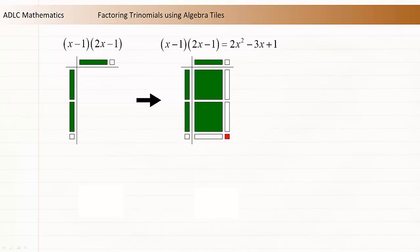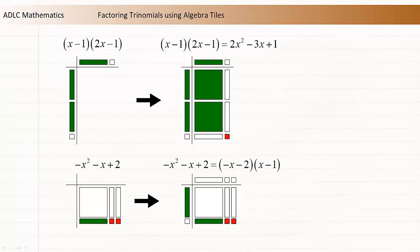This suggests that you can use algebra tiles to reverse the process and factor trinomials. If you can represent a trinomial as a rectangle, its length and width will represent the factors of that trinomial.